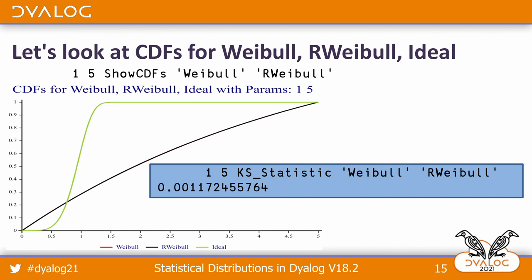However, there is no way that they are anywhere similar to what we get from our ideal distribution. When we compare using a Kolmogorov-Smirnov statistic the two distributions — that is, what we get in APL and what we get from R — we have very close agreement.